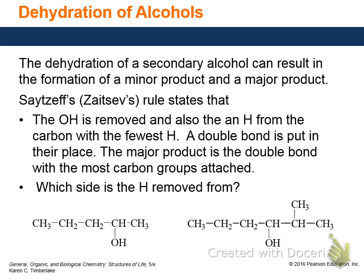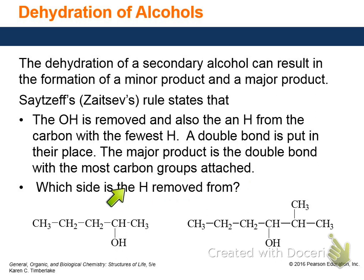Actually, I called it Markovnikov's — it's Zaitsev's rule, my bad. So to restate: OH is removed, and the H comes from the carbon with the fewest hydrogens, and the double bond is put in their place. The major product is the double bond with the most carbon groups attached.